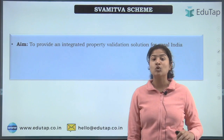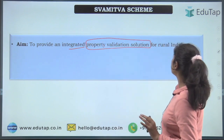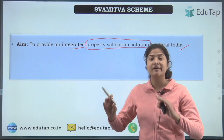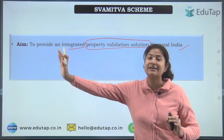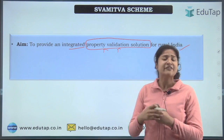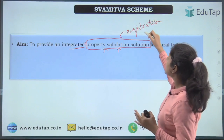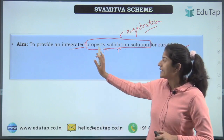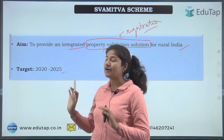The aim of the scheme is to provide an integrated property validation solution for rural India. Unlike urban areas where property boundaries are well-defined, rural areas lack this system. So the scheme aims to provide proper documentation and verification of all property owned in rural areas — property validation, assessment, and registration are all covered under this.